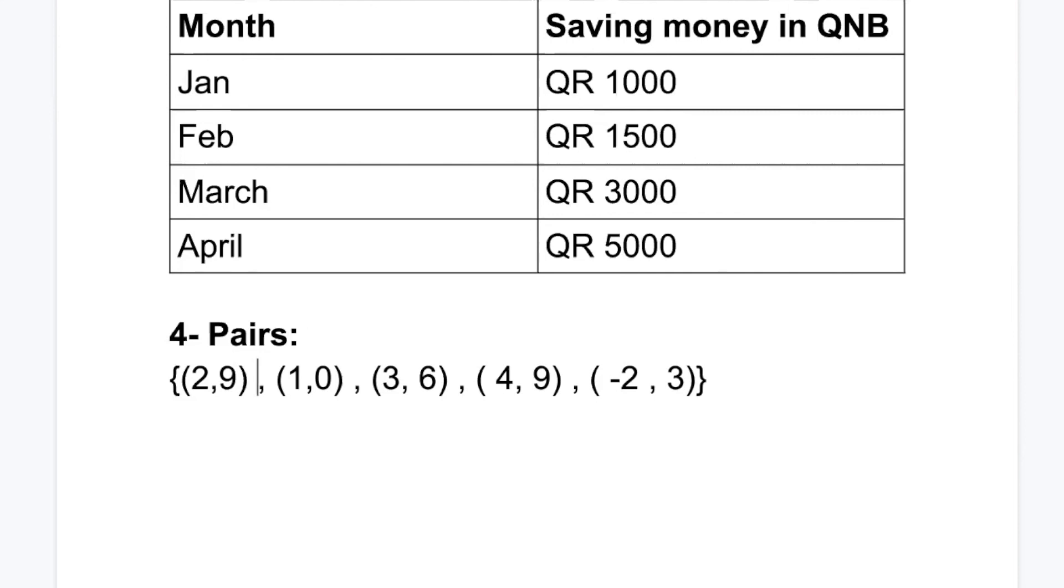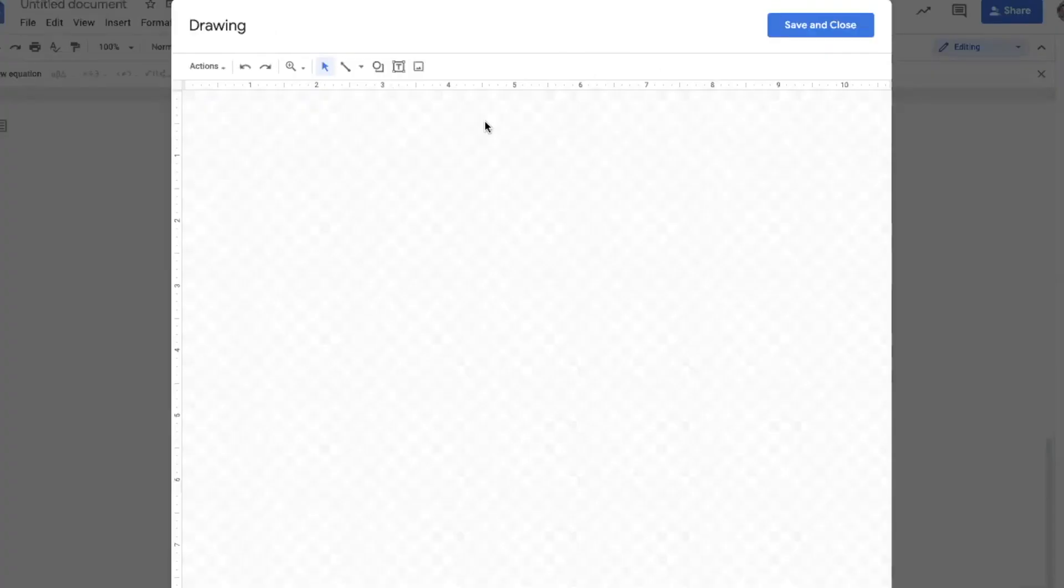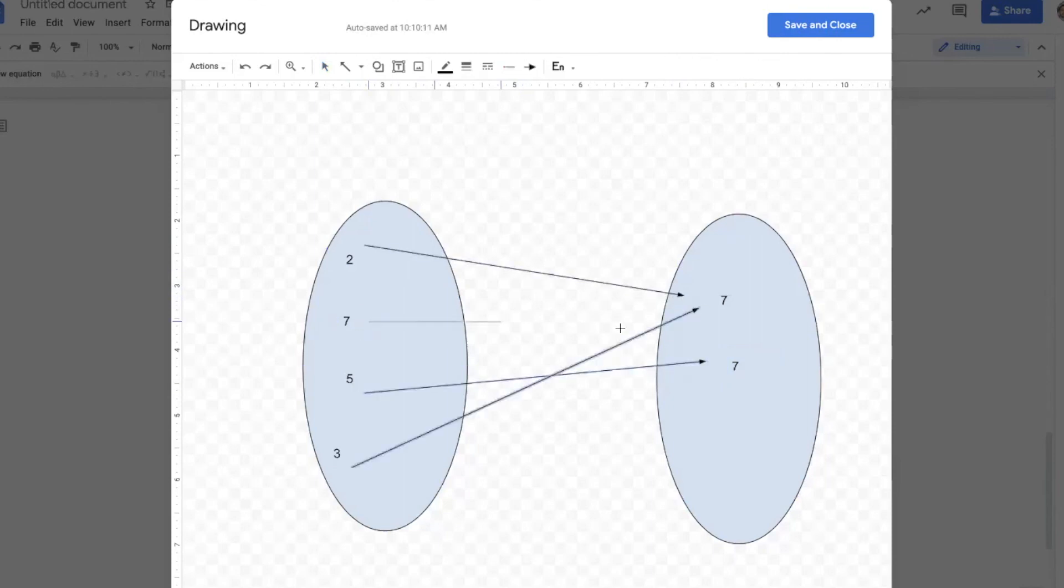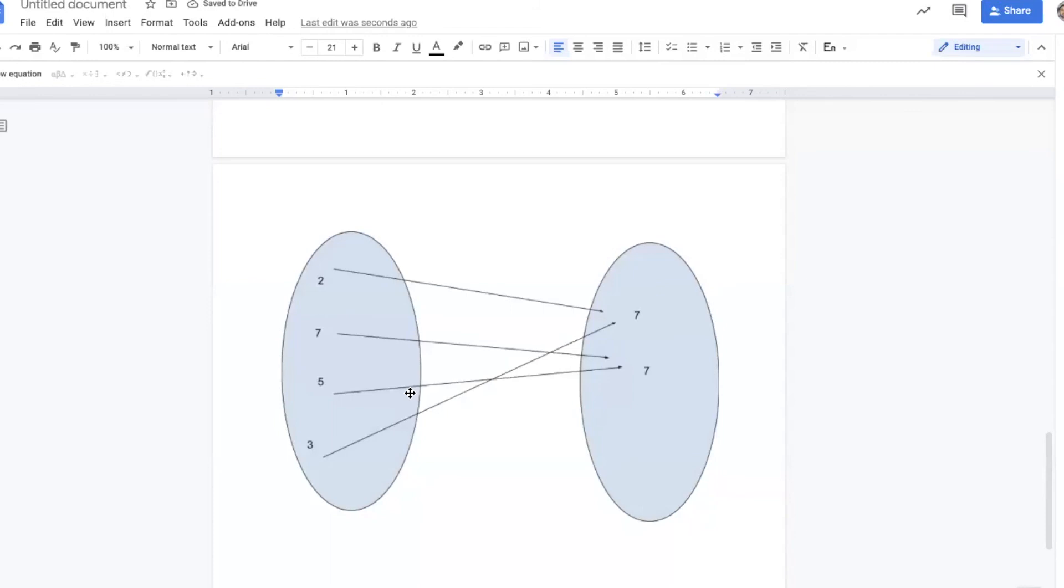The fifth way of representing a function is called Venn diagram. What is Venn diagram? It's named after a person who said why don't I put x values in a circle and y values in a circle. Then I will match between x and y with arrows. The domain is on the left, the range on the right, and the arrow moving from 2 to 7 means x is 2, y is 7.